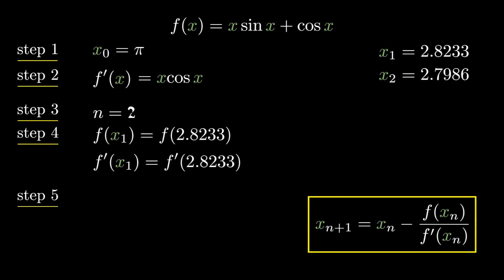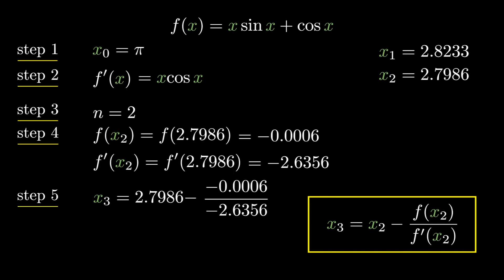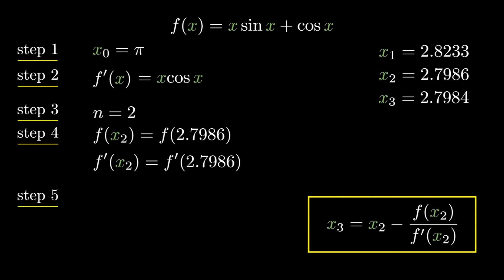We need to find x₃. Substituting n=2 in Newton-Raphson: x₃ = x₂ − f(x₂)/f'(x₂). f(x₂) = f(2.7986) = −0.0006, and f'(x₂) = f'(2.7986) = 2.6356. We get x₃ = 2.7984. x₂ and x₃ are the same to three decimal places (2.798), but we need four decimal place accuracy, so let's iterate once more.